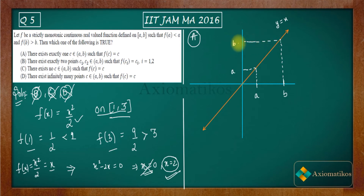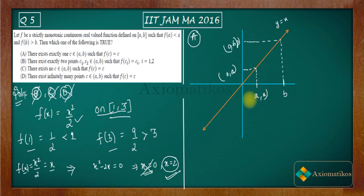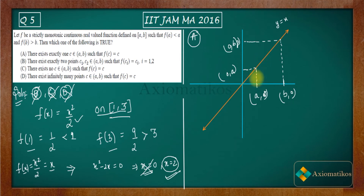On the graph, this point is (0, b) and this is (0, a), this is (a, 0) and this is (b, 0). Now let me construct my function on top of this.